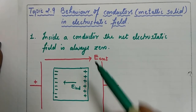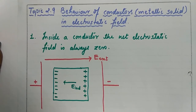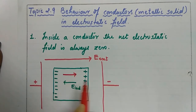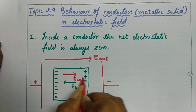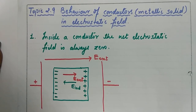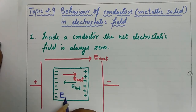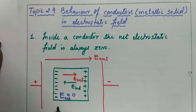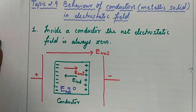At one point, this external electric field and this induced electric field become equal in magnitude. The external field direction is one way — E external — and when the magnitude of this induced field becomes equal, the resultant electric field inside the conductor, E net, becomes zero. This is how we can prove that inside a conductor the net electrostatic field is always zero. So this is our conductor and these were our plates to create the external electric field.